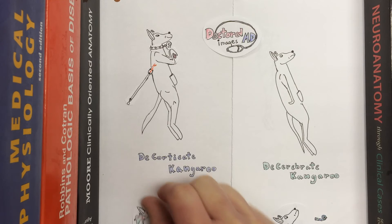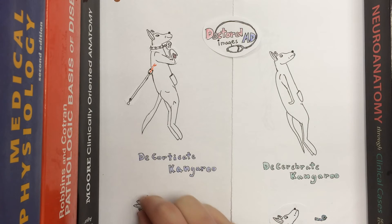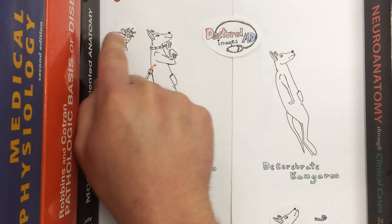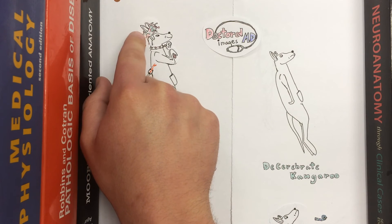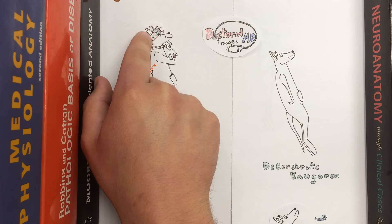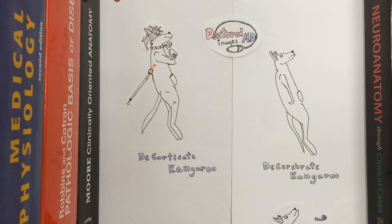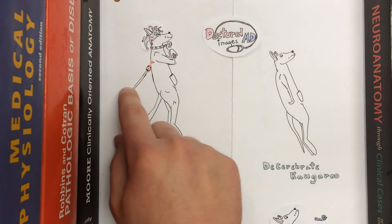One more thing before we move on: this decorticate kangaroo is a court jester, so he is going to have this court jester's hat. So you can picture this happy kangaroo carrying his ruby in decorticate posture.